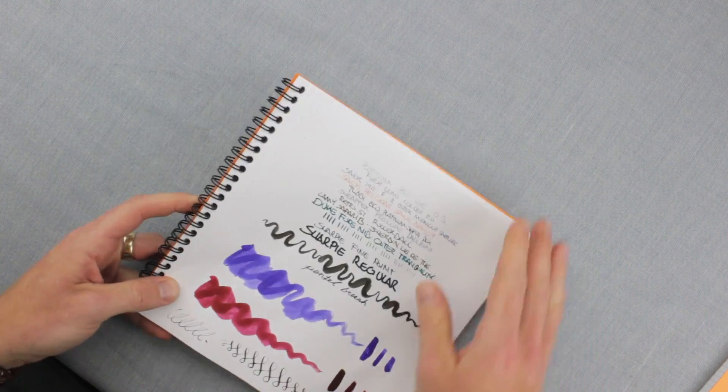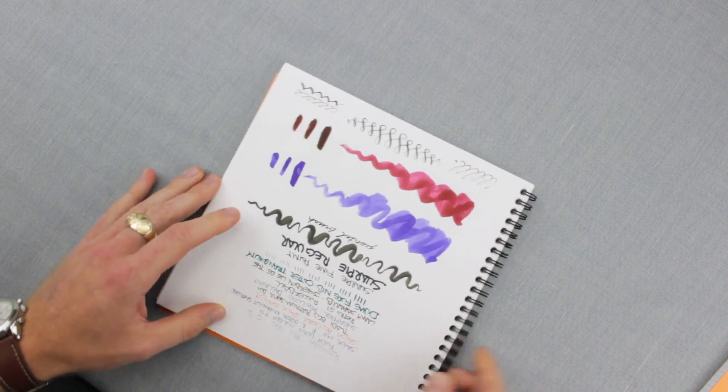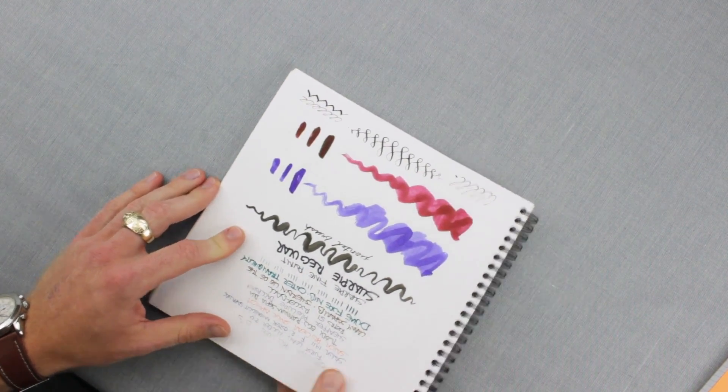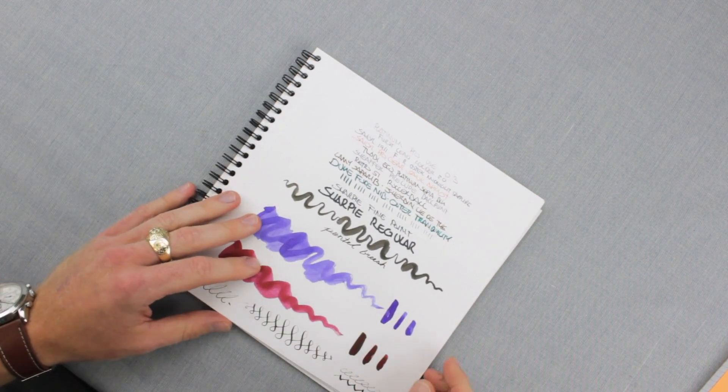With a standard wire-bound notebook you can twist it around. The square format really lends itself to flexibility. If you want to flip it vertically, or if you're left-handed and want the binding on the other side, you can flip it around and it's still the same format.